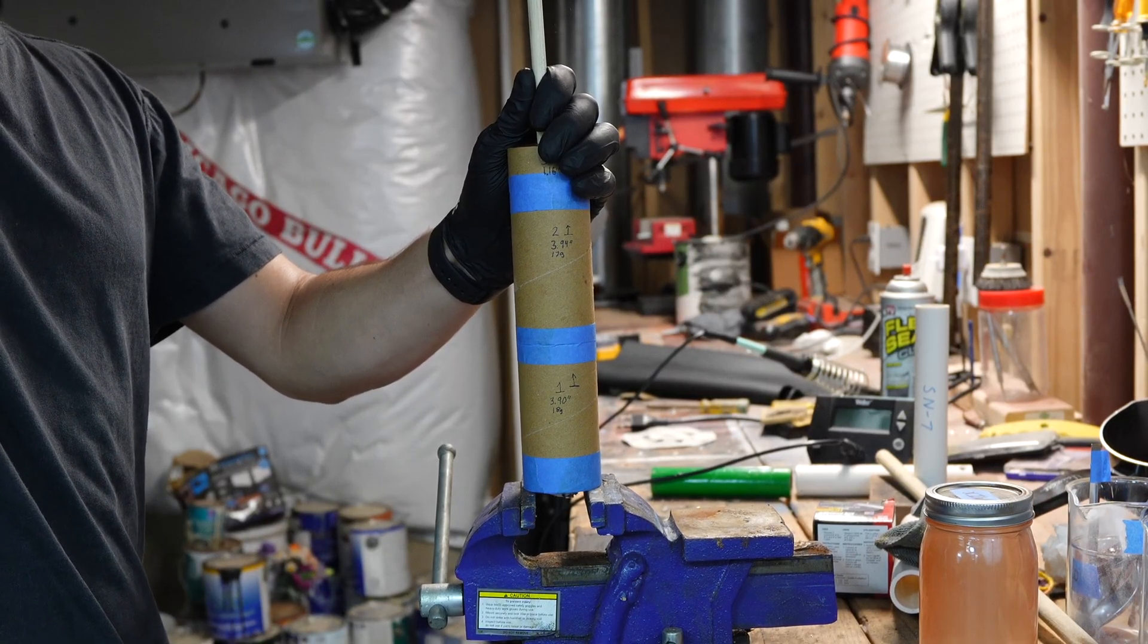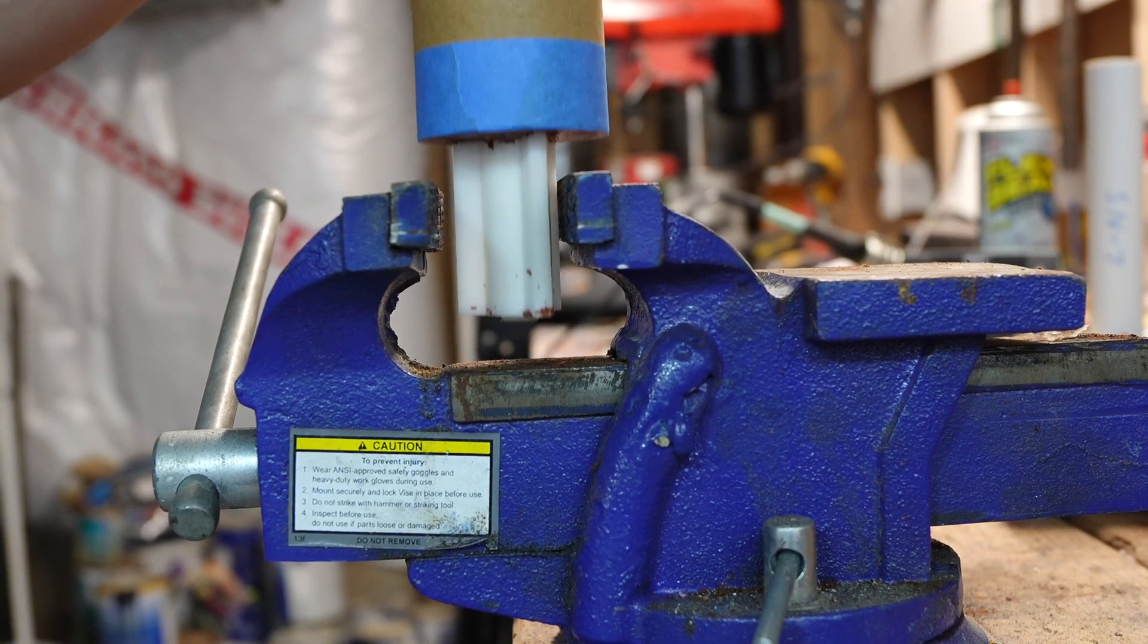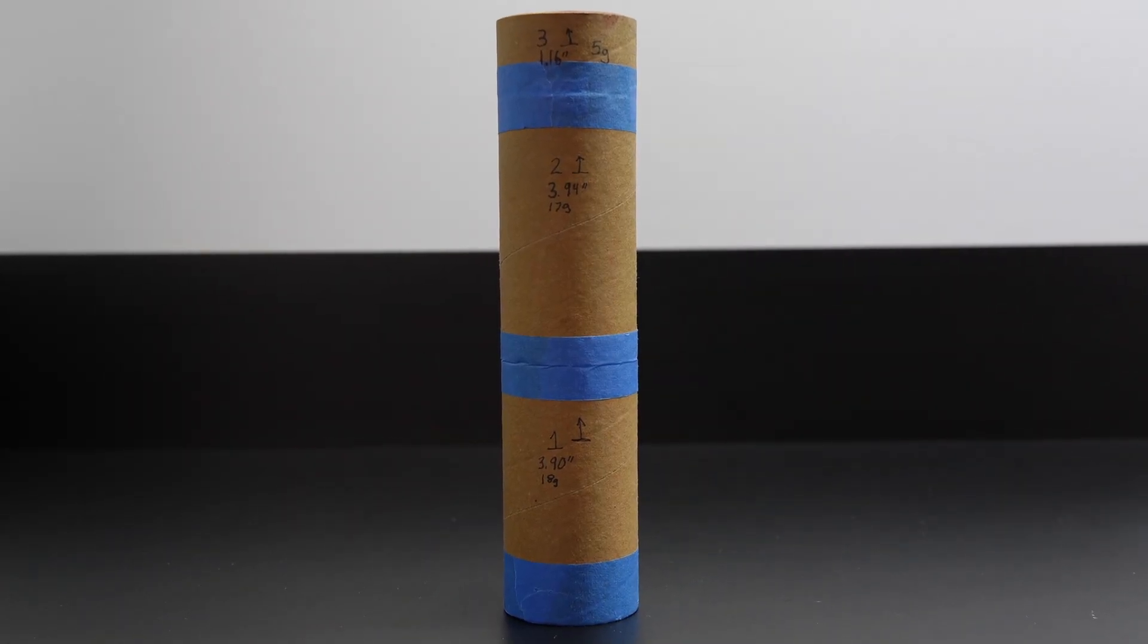To get the finisil mold out, I set the propellant on top of a vise and use a dowel to tap the mold out. If you use enough lubricant, it will slide out nicely. And just like that, the propellant grain is done.